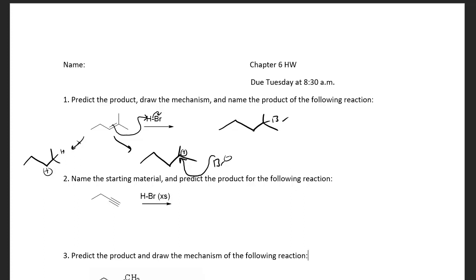Bromine attacks that carbocation intermediate to give us our product. To name it: carbon one, two, three, four, five — we have pentane — with a methyl and a bromine at the two position. So this is 2-bromo-2-methylpentane.